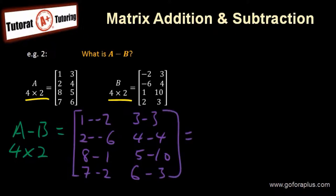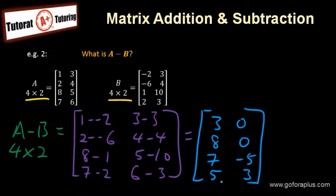Now we have the answer as 3, 0, 8, 0, 7, minus 5, 5, and 3. So we have a matrix of 4 by 2. This is how we do matrix subtraction.